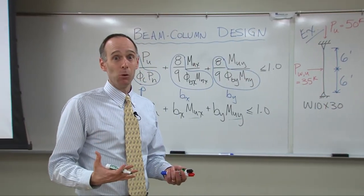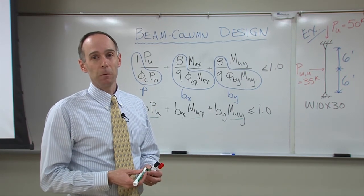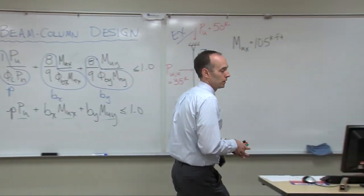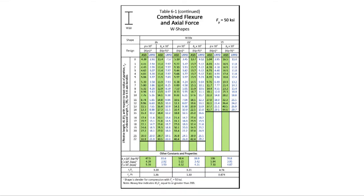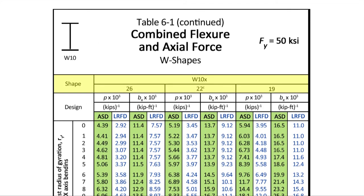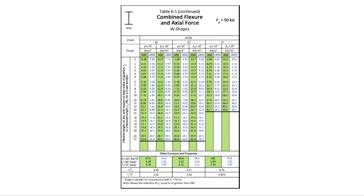It's probably no surprise that there is a table that has all of these values — it turns out to be very convenient for these types of calculations. That table is Table 6-1. Here's Table 6-1, starting at page 6-89. You can see all the different shapes — for instance W10 by 26, 22, and 19. Based on the length — either KL, the effective length of the column, or LB, the unbraced length of the beam, as noted in the margin — you look up that length and pull up the values for Bx and P.